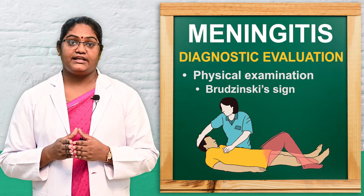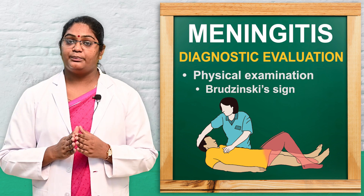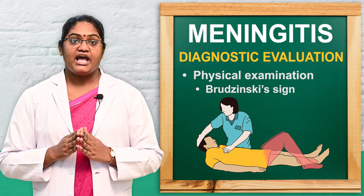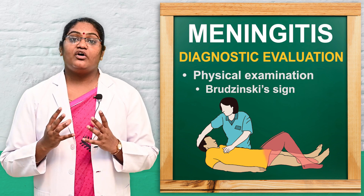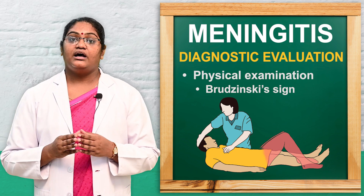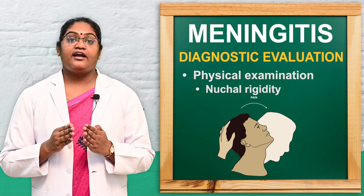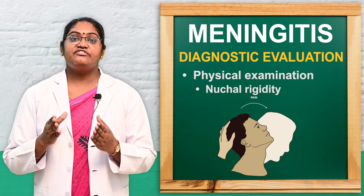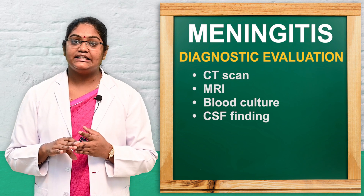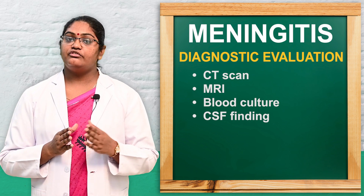Brudzinski's sign is assessed with the patient in a supine position. Place one hand under the patient's head and another over the chest, then flex or raise the patient's head. An involuntary rise or flexion of the patient's legs or hips is a positive Brudzinski's sign. Nuchal rigidity involves assessing stiffness of the neck. Other investigations include CT scan, MRI, blood culture, and CSF analysis.